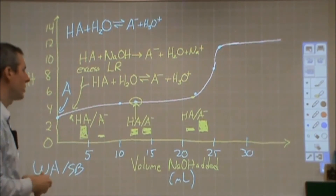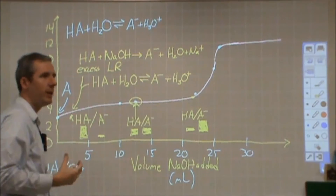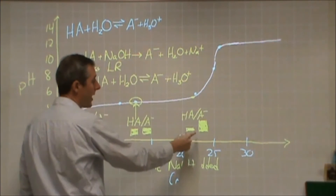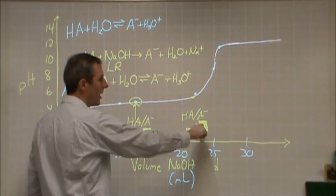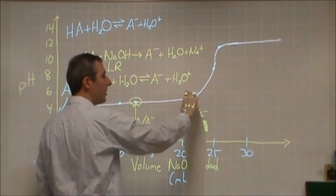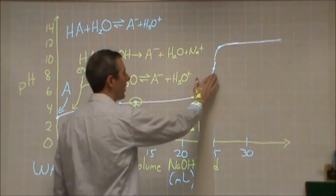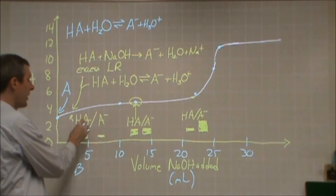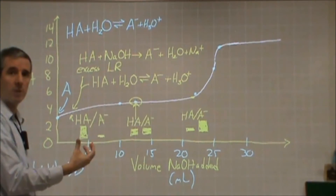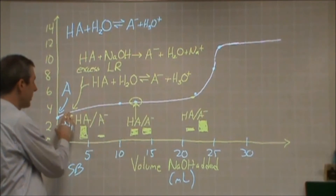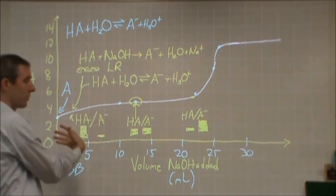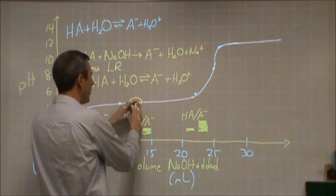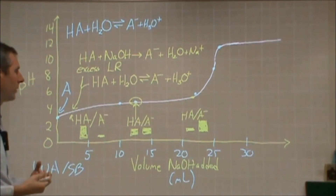A common question about the buffering region is: where is the buffer losing its capacity? As we get to the edges of this region, if I continue to add NaOH I'm drastically changing the ratio of HA to A⁻, and that's going to cause the pH to start changing by more — you can see the upswing where pH starts to rise really rapidly. Similarly, on the other edge, if I added a bunch of strong acid I'd exceed my buffer capacity and pH would drop rapidly. Near the half-equivalence point is when the buffering region is most stable.